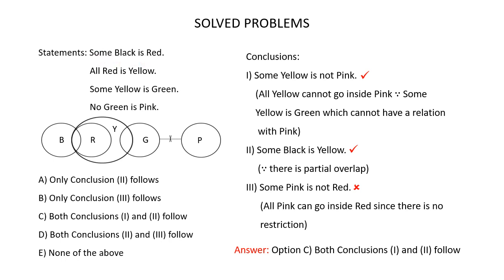Some black is red means there has to be a partial overlap between black and red. All red is yellow means all red should be inside yellow. Some yellow is green means there has to be a partial overlap between yellow and green. No green is pink — draw a circle for pink and draw a line with a cross from green to pink. This is the Venn diagram for the given statements. Now let's check which of the given conclusions follow.